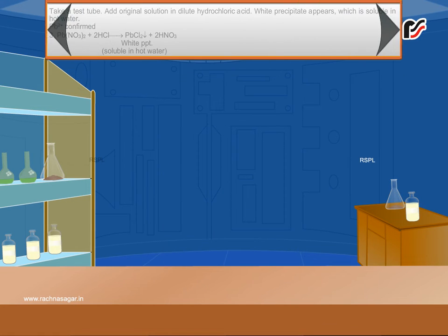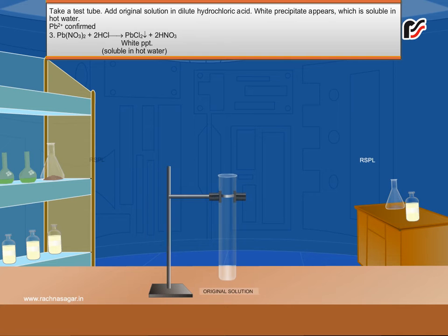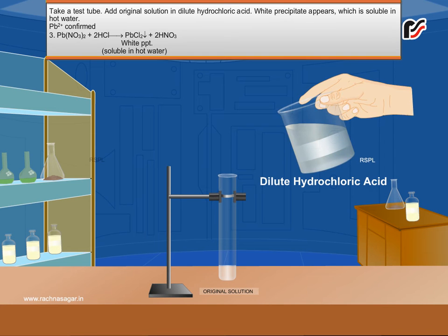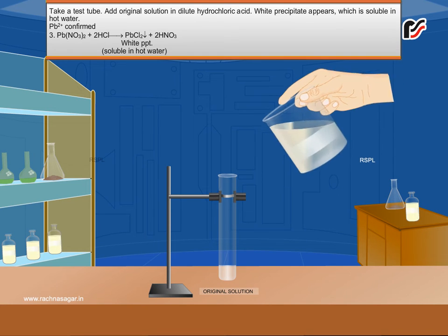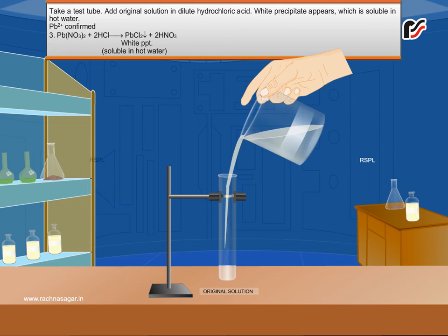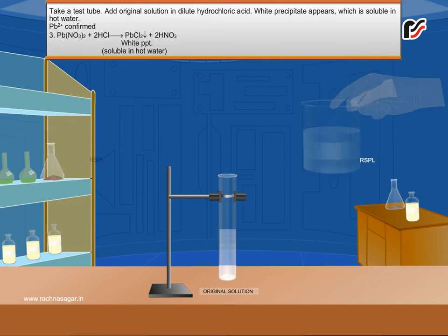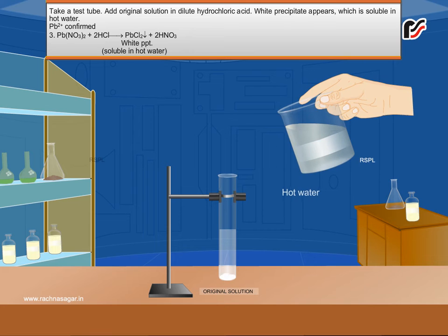Take a test tube and add the original solution in dilute hydrochloric acid. A white precipitate appears which is soluble in hot water. This is characteristic of lead chloride (PbCl₂), supporting identification of the Lead Ion.